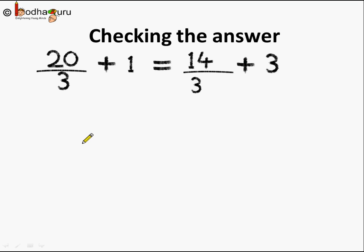Let's do the LCM. So it will be 3 and here we will get 3. So 20 plus 3 as the numerator which is equal to 23 by 3. And on the RHS again LCM is 3. So we will get 14 plus 3 multiplied by 3 which is 9. So 14 plus 9 equal to 23 in the numerator and 3 in the denominator.